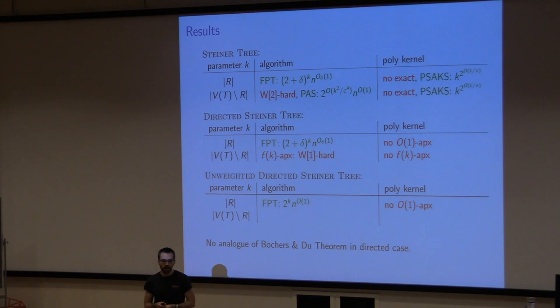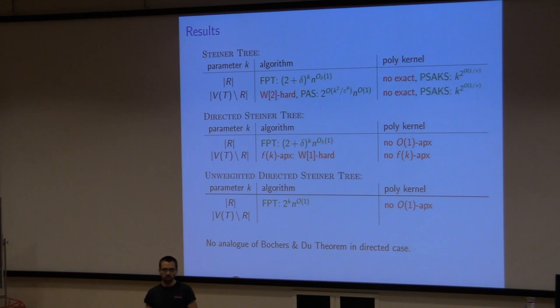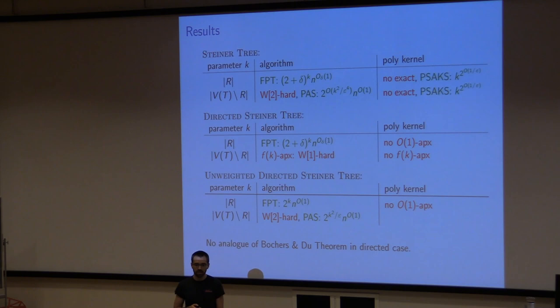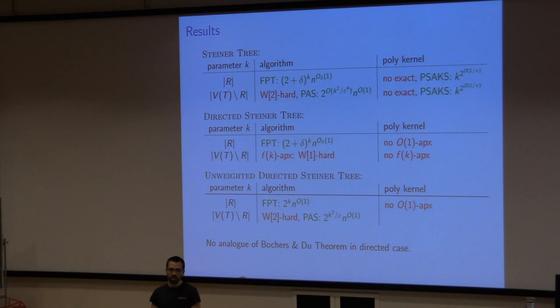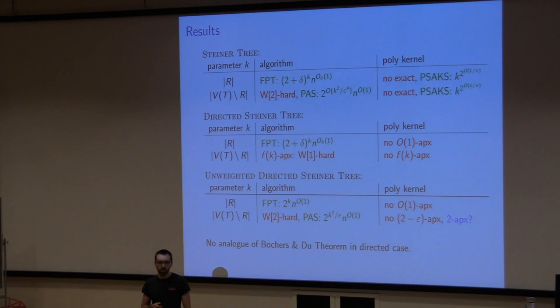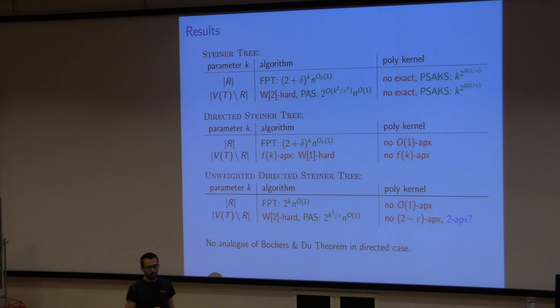For the unweighted directed case, parameterized by number of Steiner vertices in the optimum, something interesting happens: it's W2-hard, but there is actually a parameterized approximation scheme using essentially the same pre-processing followed by an FPT algorithm. However, for polynomial kernels, we can show there is definitely no better-than-2-approximate kernel — a lower bound. But we don't have a matching upper bound, which was the main open problem I presented on Monday.